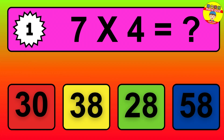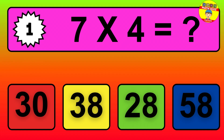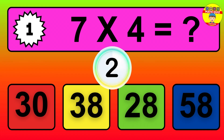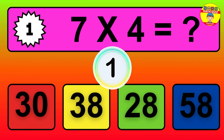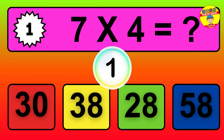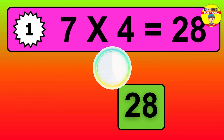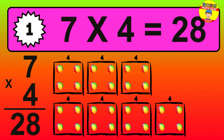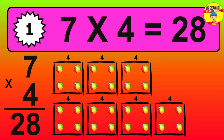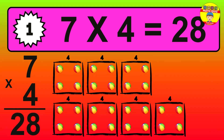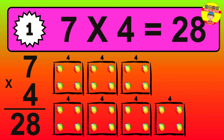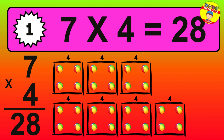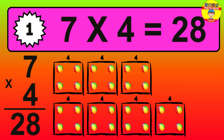Question 1. 7 times 4 equals what? The answer is 7 times 4 is 28. To calculate, we have 7 groups with 4 balls each one. So, how many balls do we have? 28 balls.